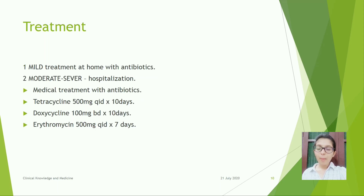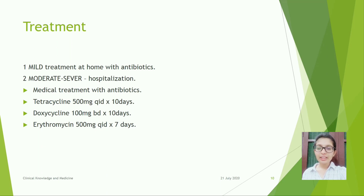Treatment: mild cases — treatment at home with antibiotics. Moderate to severe cases require hospitalization and medical treatment with antibiotics. Tetracycline 500 mg four times a day for 10 days. Doxycycline 100 mg two times a day for 10 days. Erythromycin 500 mg four times a day for 7 days.